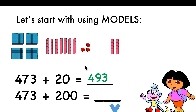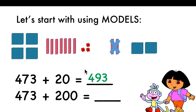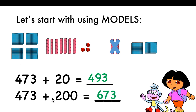When you're adding hundreds, you add the hundreds digits. The hundreds digit will change — number 4 will change. 4 plus 2 equals 6. The tens and ones will stay the same. So you will have 4 plus 2 equals 6, and 73 stays the same: 673.